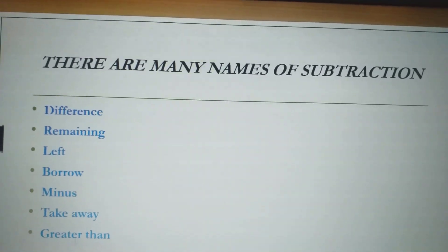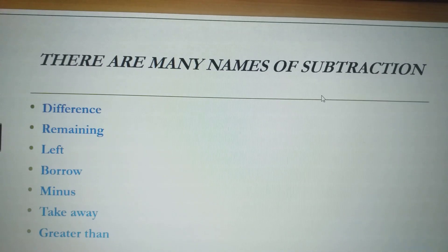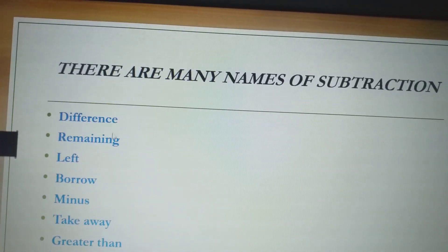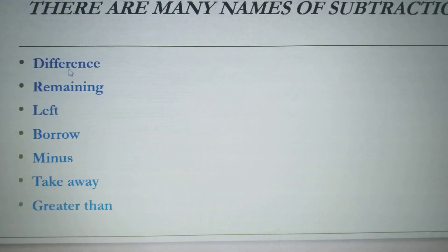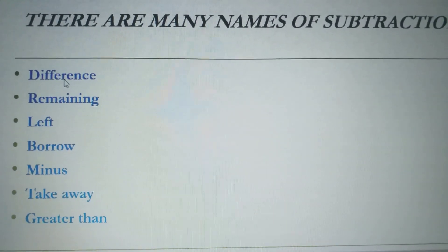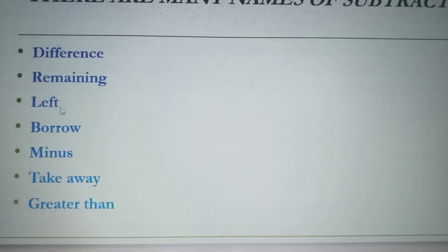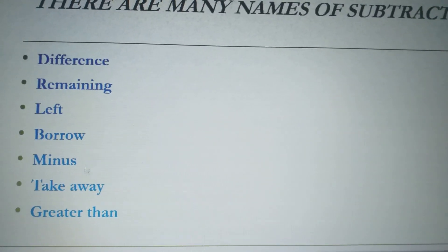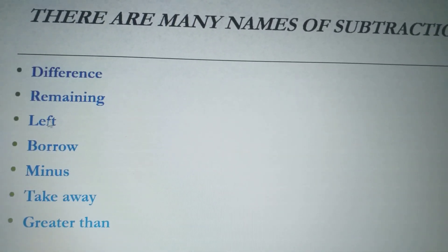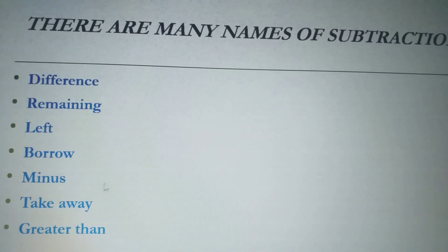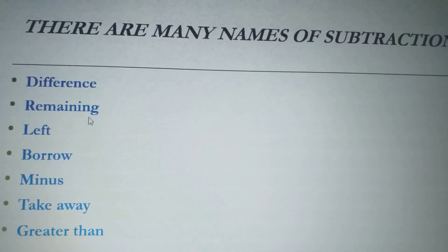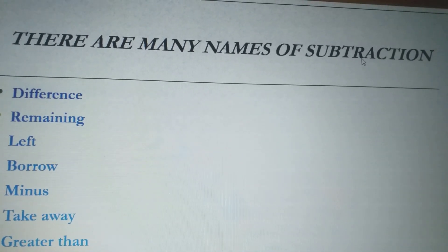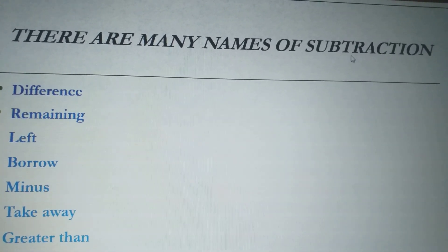Children, you can see here I have written different names of subtraction. You have to look for the following terms to identify the subtraction word problem. The terms are: difference, remaining, left, borrow, minus, take away, greater than. Whenever you find these types of words in a word problem, you can easily recognize that this word problem is definitely related to subtraction.